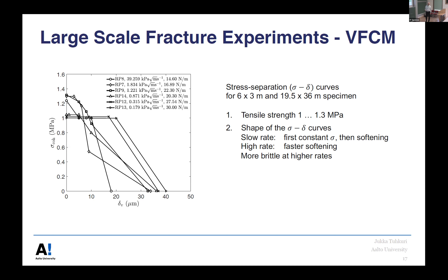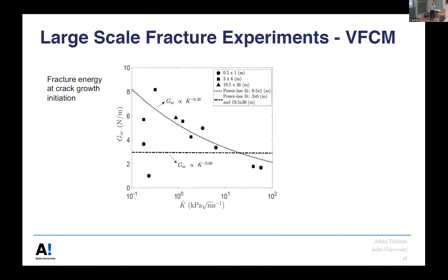From back-calculating the stress-separation curve, we see the tensile strength of ice at 1 to 1.3 MPa, which makes sense. At slow rates, the stress-separation curve has a flat portion before dropping; at high rates, it drops immediately — failure is more brittle at higher rates, as expected. We can calculate fracture energy from that, and we observe the same rate and size effects in the fracture energy results for this very warm fresh water ice.